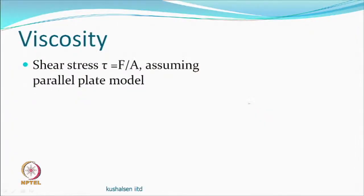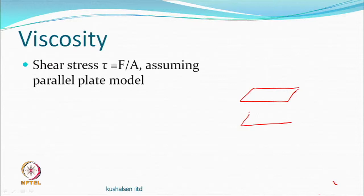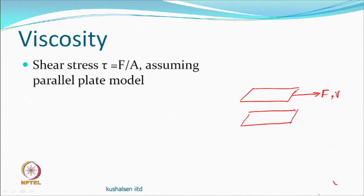In the parallel plate model, it is assumed that one plate is moving and the other is stationary. You require a certain amount of force to pull the moving plate at some velocity. If we consider this particular plate, it has some area. From a simplistic point of view, shear stress is defined as force divided by area.